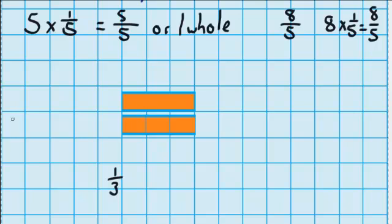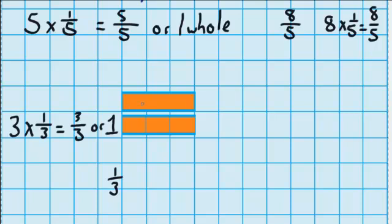Or I could write that it takes three of these thirds to make one whole, which I can write as three-thirds or one whole. You can see here are my three-thirds, and here is my one whole, and they're exactly the same.